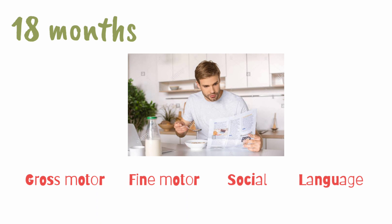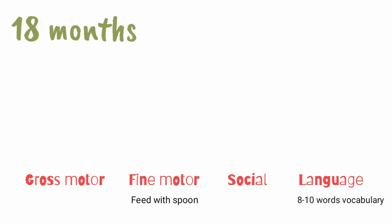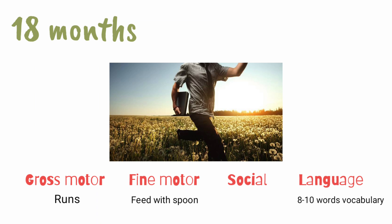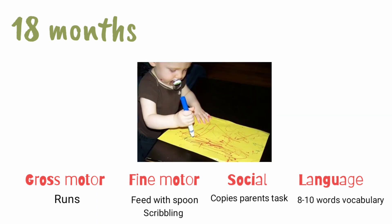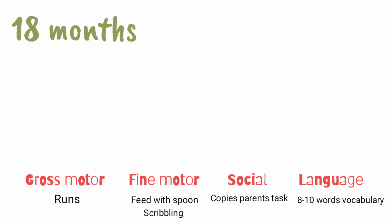For 18 months, remember a story of a stock market investor. The man wakes up late, is in a hurry, sits at the dining table having breakfast with a spoon, and at the same time reads the newspaper, noting down 8 to 10 important stocks to invest in that day, then runs to his office. His son observes the daily routine and tries to copy him. The child does not understand what to note down, so he scribbles something on the page. Key points: gross motor — runs; fine motor — scribbles and feeds with spoon; social — copies parent in task; language — 8 to 10 words vocabulary.